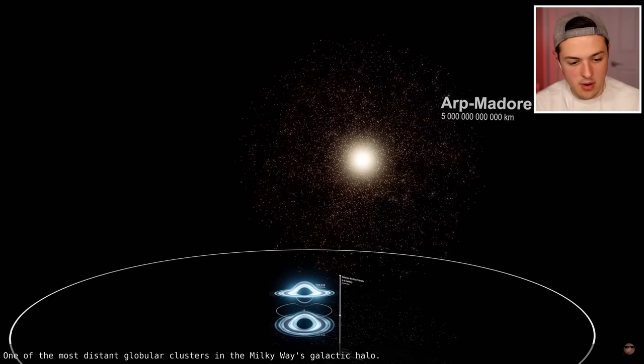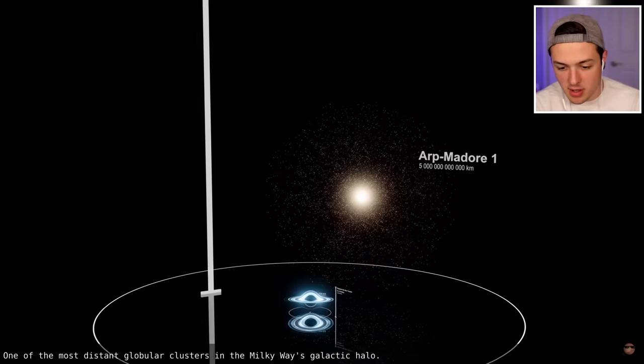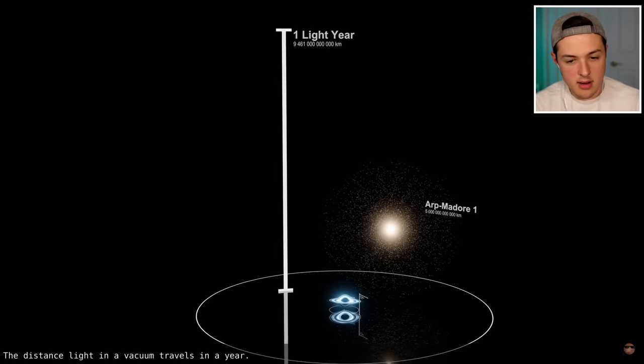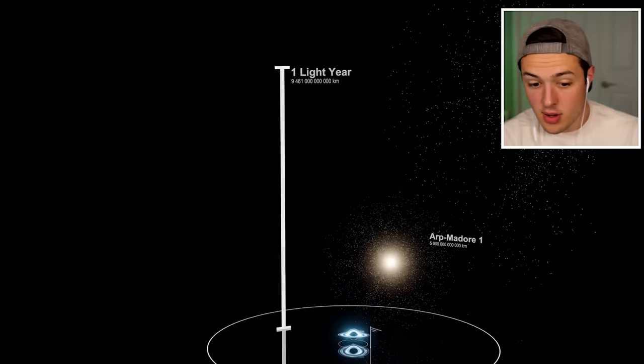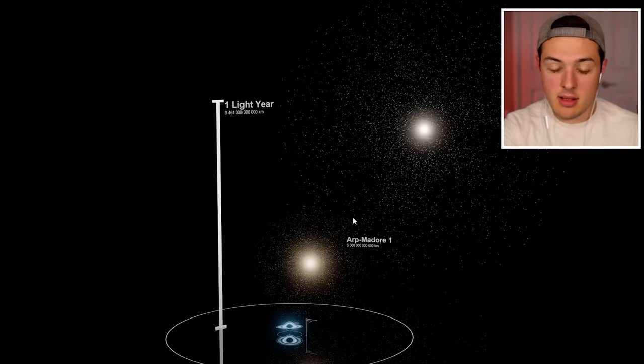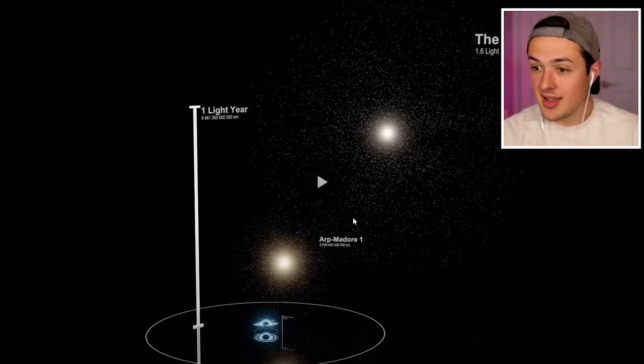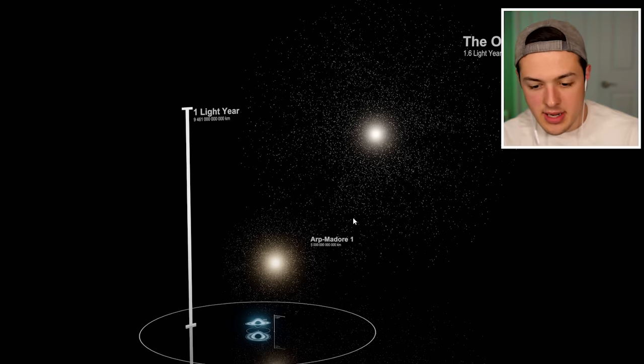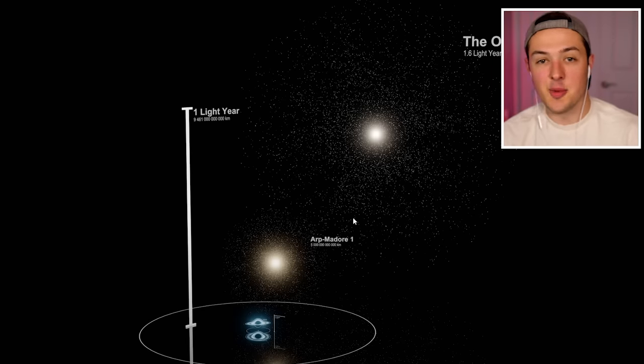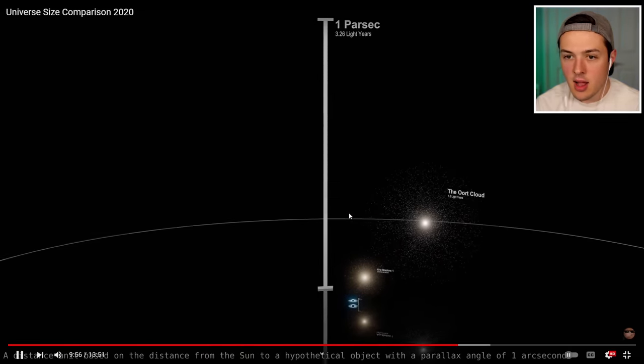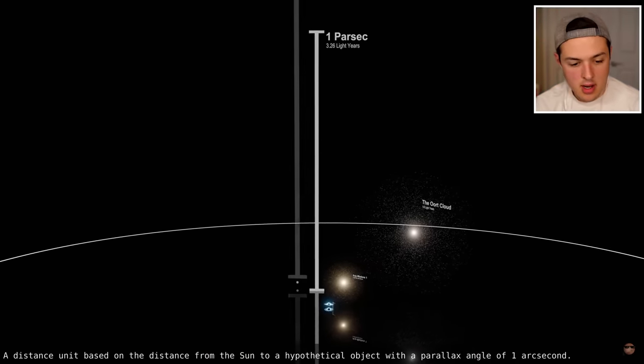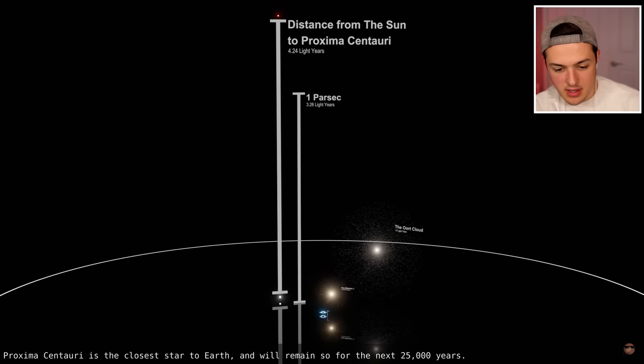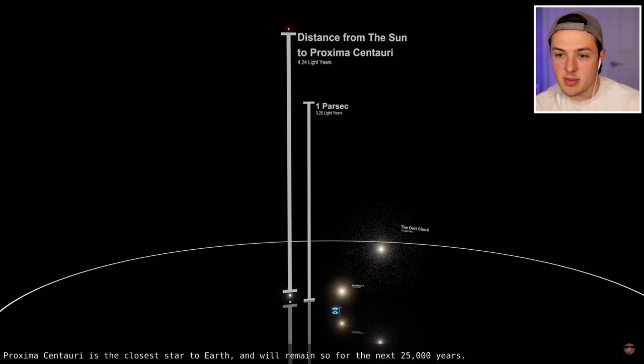What is this? Arp Madore. One of the most distant globular clusters in the Milky Way's galactic halo. That is one light year. That is how far light travels in a year. What? The Oort Cloud. A theoretical cloud of planetesimals orbiting the sun at distances ranging from 2,000 to 100,000 AU. I don't even know what AU means. One parsec. A distance unit based on the distance from the Earth to the sun. Distance from the sun to Proxima Centauri.